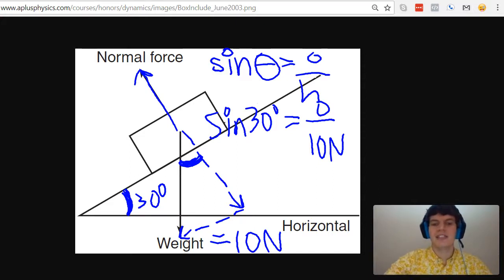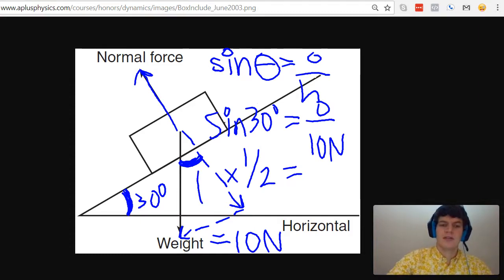For sine of 30 degrees the answer is going to be one half. So sine of 30 degrees is one half and then we're going to multiply that by 10. So multiplied by 10 equals opposite. Therefore 5 newtons equals opposite. There's my answer.